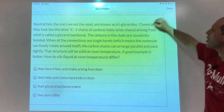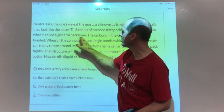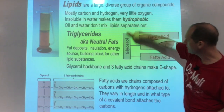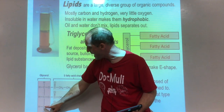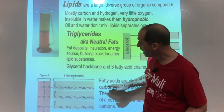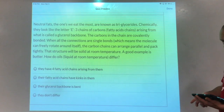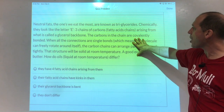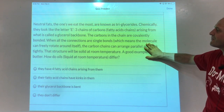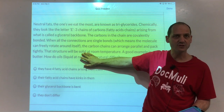Neutral fats, the ones we eat most, are known as triglycerides. Chemically they look like the letter E — three chains of carbons, called fatty acid chains, arise from what we call the glycerol backbone. The glycerol backbone has some oxygen in it, which sets up the ability for all these carbon chains to come out. These are large molecules. The carbons in the chain are covalently bonded. When all connections are single bonds, the molecule can freely rotate around itself, and the carbon chains can arrange parallel and pack tightly. That structure will be solid at room temperature — a good example is butter.